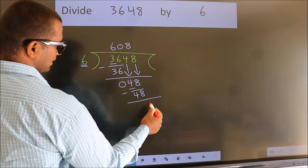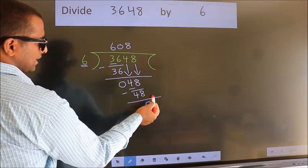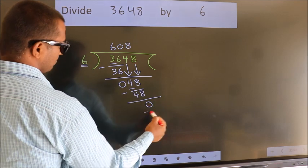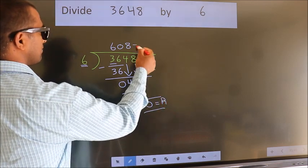Now we subtract. We get 0. No more numbers to bring down. So we stop here. This is our remainder. This is our quotient.